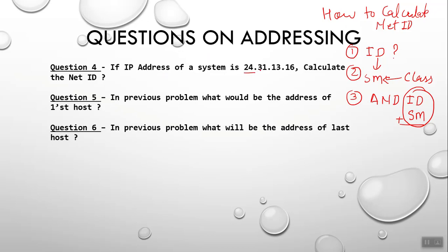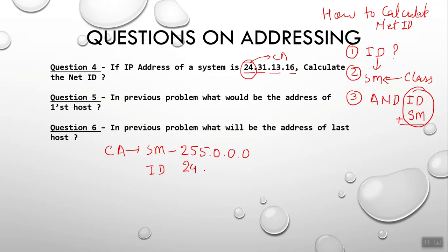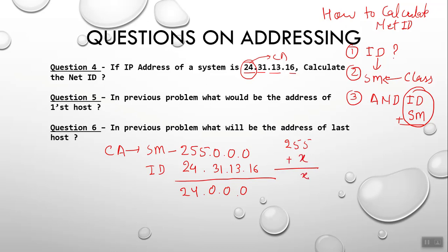The IP 24.31.13.116 belongs to Class A. The Class A subnet mask is 255.0.0.0. When you perform the AND operation, remember the shortcut: AND with 255 gives you the original value X, and AND with 0 gives you 0. So you will get 24.0.0.0 as the network ID.